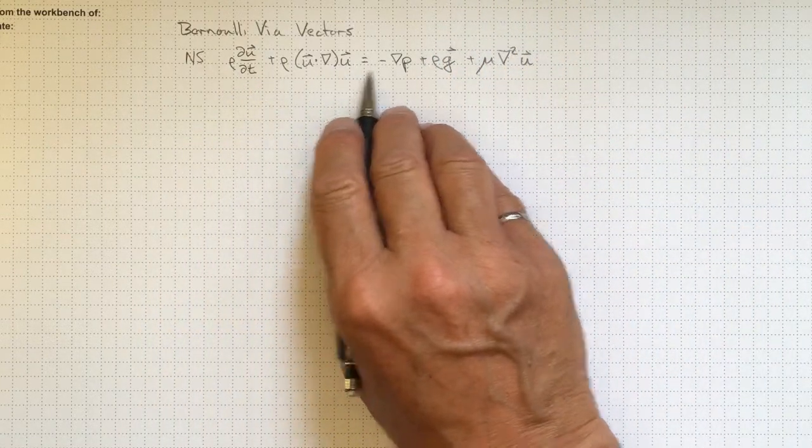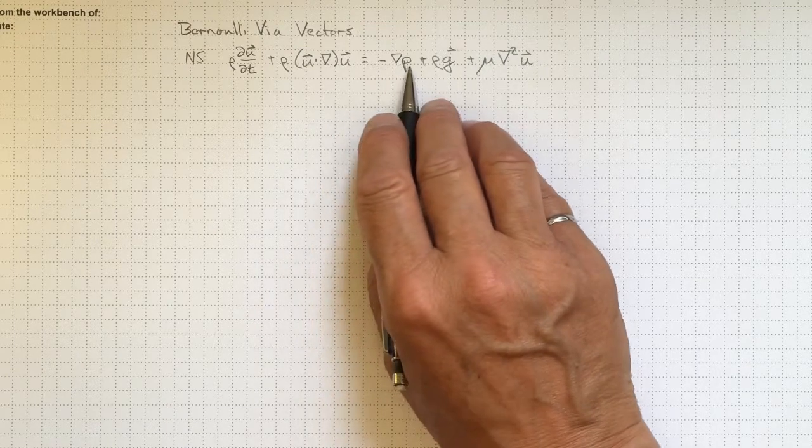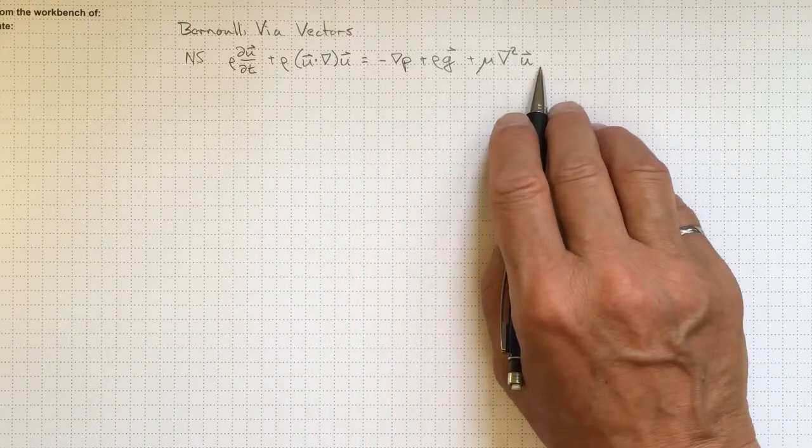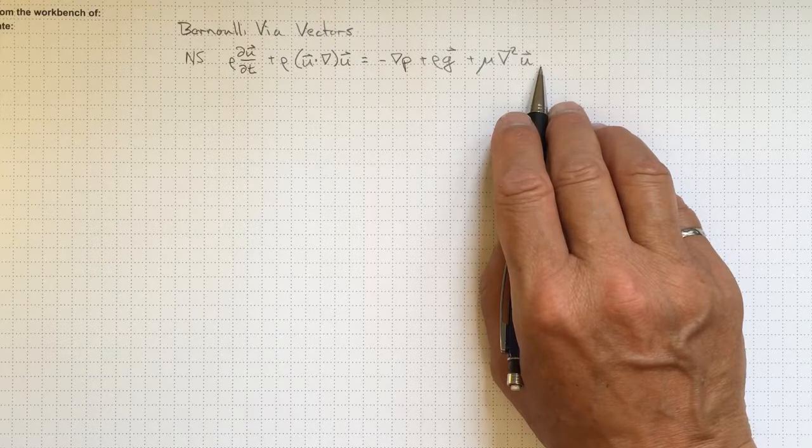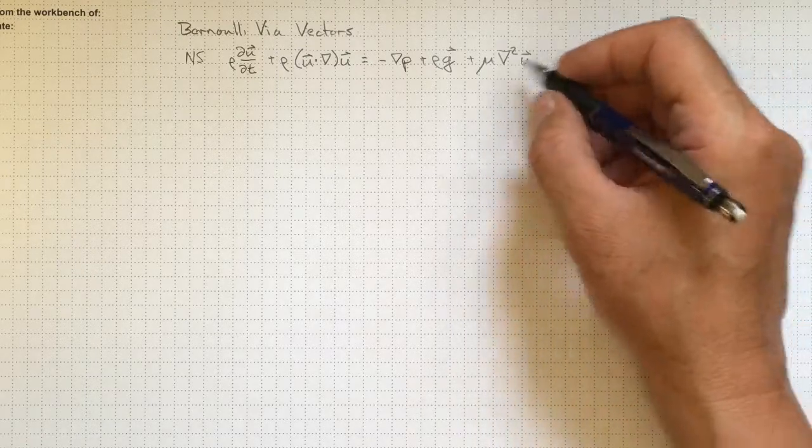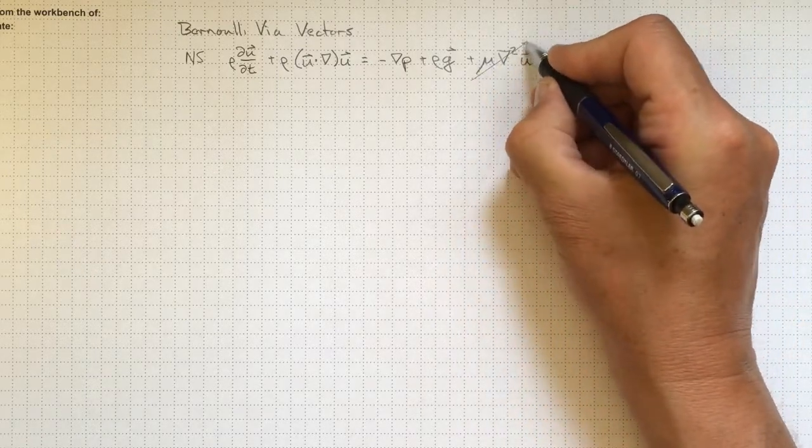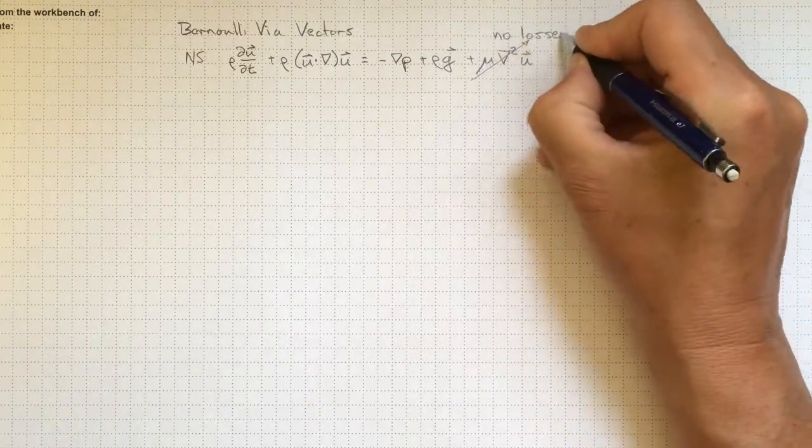This equation tells us that the acceleration of a particle depends on the applied pressure forces, gravitational forces, and viscous forces. If we have no energy lost or gained, then these viscous forces will be canceling out because those are our losses.